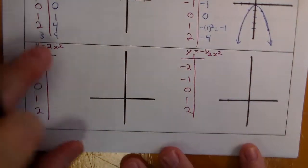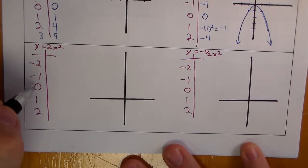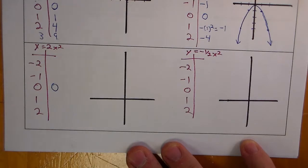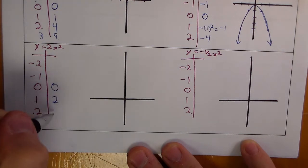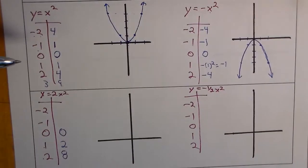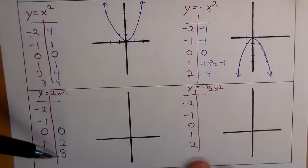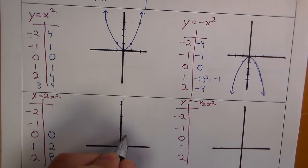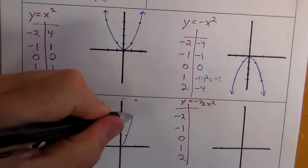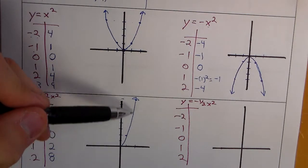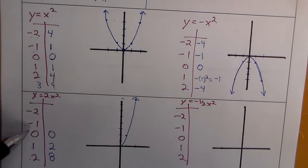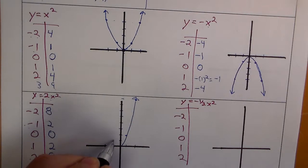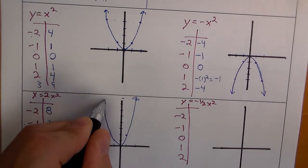Now let's look at 2x² and -½x². For 2x²: x = 0 gives 0, x = 1 gives 1² × 2 = 2, x = 2 gives 4 × 2 = 8. Compared to x² which gave 0, 1, 4 — we're doubling the values. So the points go much steeper, producing a more narrow parabola. By symmetry, negative 1 gives 2 and negative 2 gives 8 on the other side.